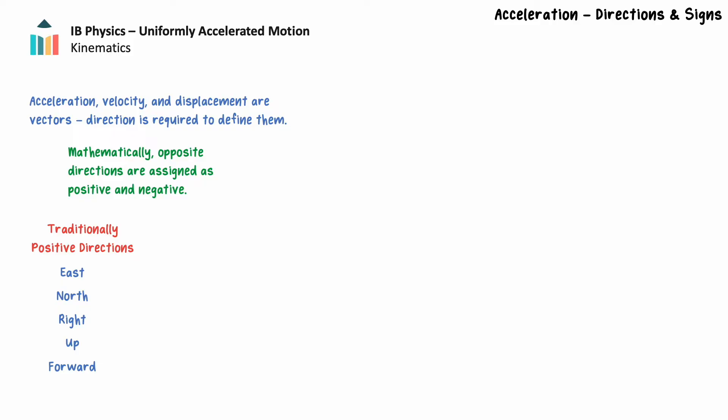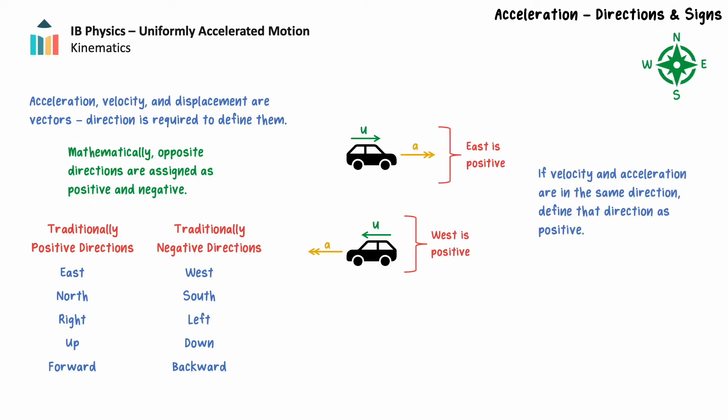Traditionally, the directions east, north, right, up, and forward have been assigned a positive direction, while west, south, left, down, and backward have been assigned a negative direction. Although all problems can be solved with these traditional direction signs, it's possible to simplify our calculations. We can assign any direction as positive, provided we are consistent in our work. In general, if the velocity and acceleration are in the same direction, that direction can be defined as positive. For example, if a car moving east accelerates east, then east would be best defined as positive. Conversely, if a car moving west accelerates west, then west would be best defined as positive.